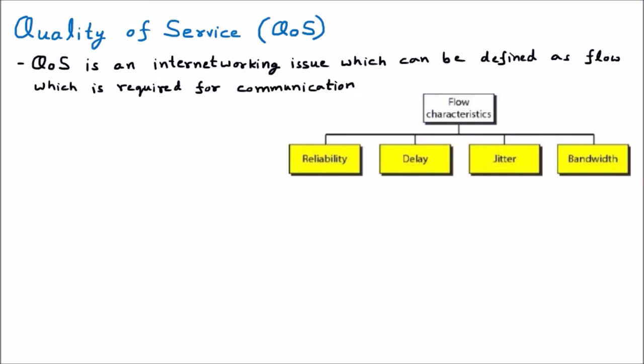To understand QoS with a simple diagram, suppose we have two systems — a sender and a receiver — connected to each other. The sender sends data to the receiver through a medium. In this medium, how much flow is there? Flow means the data that needs to be sent — the flow required for communication. This is the quality of service.